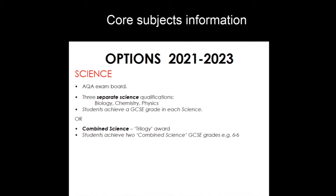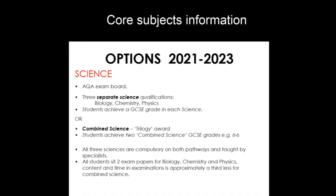The second course is combined science — sometimes called Trilogy on the AQA website. Students here study for two GCSEs in science and, by sitting six exam papers, will have an average of those six papers to give them two GCSE grades. All students must study Biology, Chemistry and Physics and will have a specialist teacher for each area. In Year 9, our students study exactly the same content, putting the building blocks in for GCSE science, with the same assessments so we can determine the correct pathway for each student.